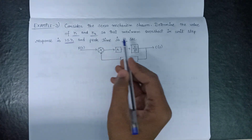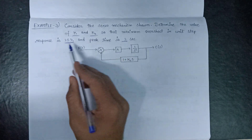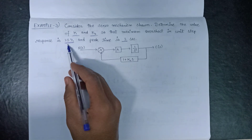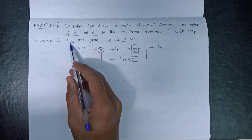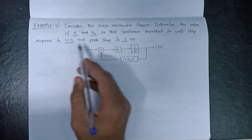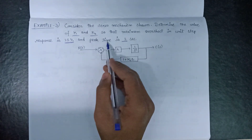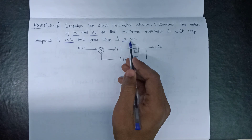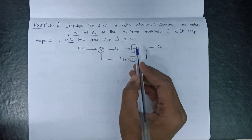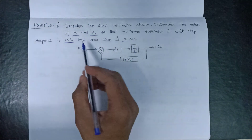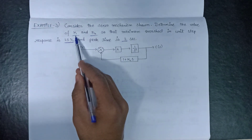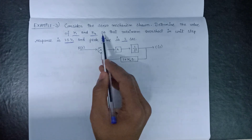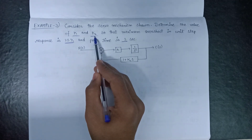In this question, we have given that %Mp is equal to 25% and the peak time tp is equal to 2 seconds. We need to determine two values: the value of k and the value of kh.